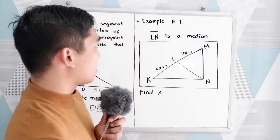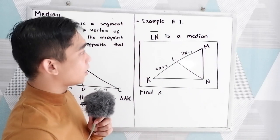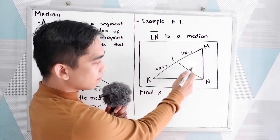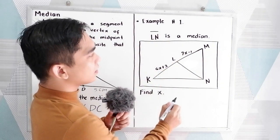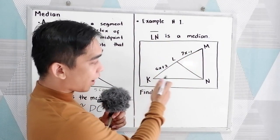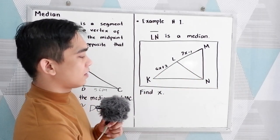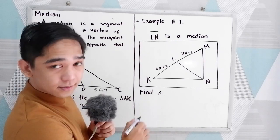Now, to better understand, let's have this first example. Segment LN is a median of our triangle KMN. Now we're going to find X.